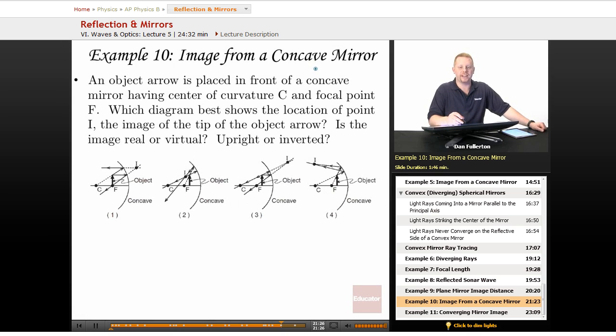Let's take a look at a problem with an image from a concave mirror. An object arrow is placed in front of a concave mirror having center of curvature C and focal point F. Which diagram best shows the location of point I, the image of the tip of the object arrow? Is the image real or virtual, upright or inverted?